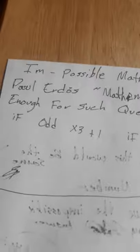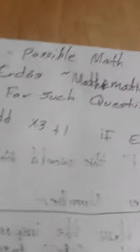I don't think any genius in the world could do it. It's attributed to Paul Erdős, who said mathematics does not get ripe enough for such questions. So, if we have an odd number, we multiply by 3 and add 1. If it's even, we divide by 2.